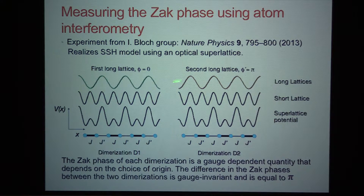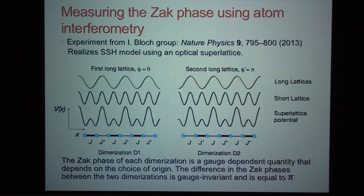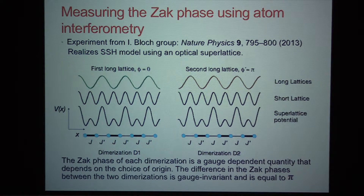You can also shift the phase of the long lattice and switch the dimerization in that way. What they set out to do in this experiment was to measure the Zak phase. The Zak phase for a band is not a quantity that is gauge-independent — it depends on the choice of origin. But the difference in the Zak phases between the two dimerizations is gauge-independent, and that is equal to pi.